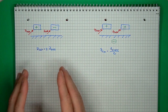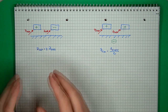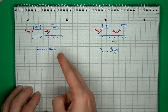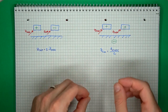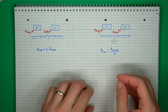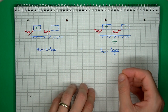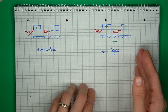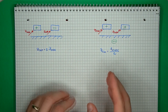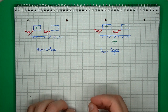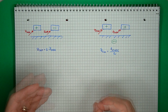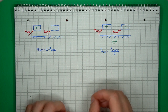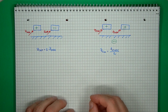Odd mode and even mode impedance refers to the impedance seen on a single line — first when a differential mode signal is applied, and second when a common mode signal is applied. The total differential impedance is twice the odd mode impedance for a symmetrical structure, and the common mode impedance is half the even mode impedance. Most PCB trace calculators that analyze differential traces will also provide these two values.